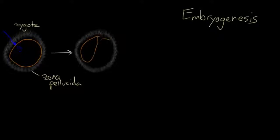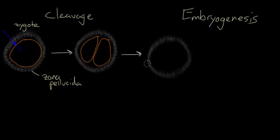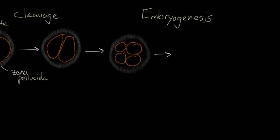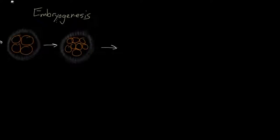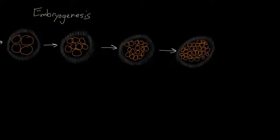Not much is going to happen when you're stuck as a single cell, so you've got to divide into multiple cells, and you've got to do it fast. In fact, you've got to do it so fast that you don't have time to grow. So you just split into two cells, and this process of splitting without growth is called cleavage. You do this a number of times, dividing from two cells to four and from four cells to eight, all the while staying within the zona pellucida. You've gone from 16 cells to 32 cells, and at this point you're called a morula — a Greek word that means mulberry, because you actually do look a little bit like one.